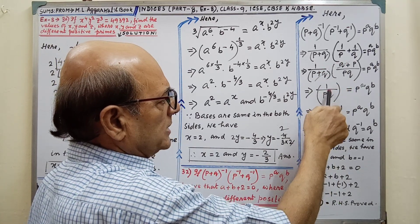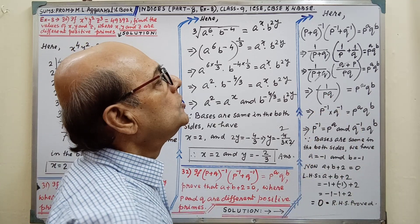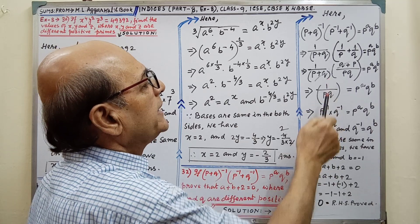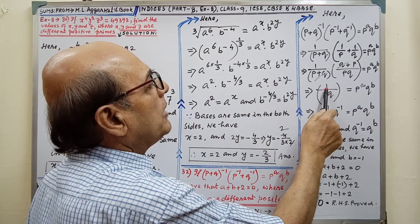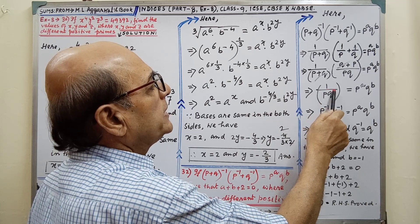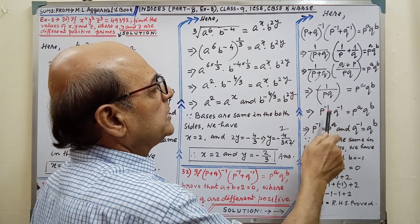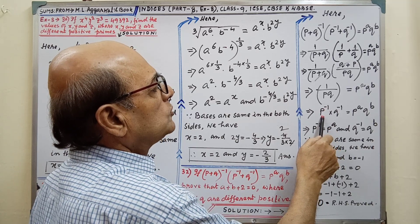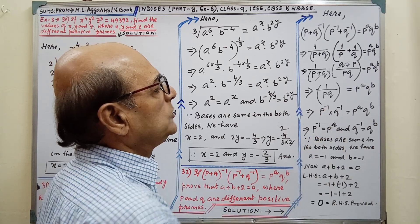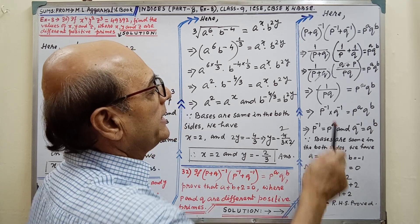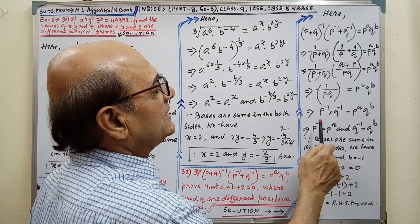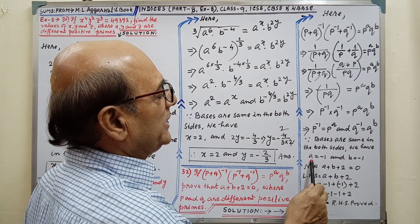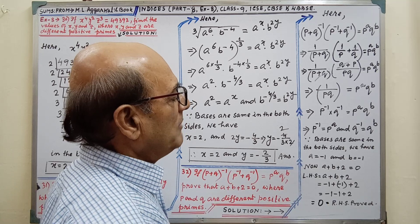Then by simplifying, we are getting 1 by pq equal to p to the power a times q to the power b. We have to bring p and q into the numerator. Here, each power is nothing, that means 1. When they come to the numerator, the power will be minus. This is why it will be p to the power minus 1 and q to the power minus 1. Now, bases are the same — so powers will be equal — giving a equal to minus 1 and b equal to minus 1.